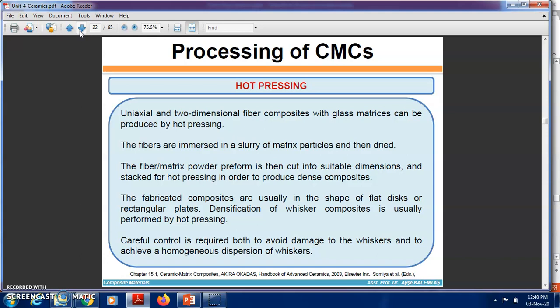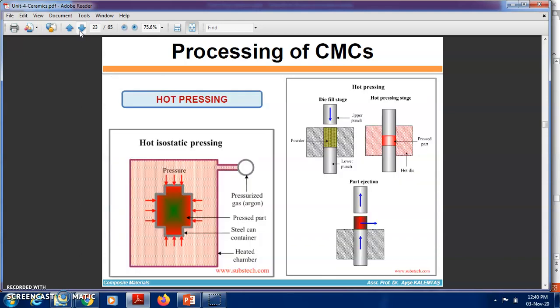Densification of fiber composites is usually performed by hot pressing. Careful control is required both to avoid damage to the fibers and to achieve homogeneous dispersion of fibers. Here you can see the hot pressing process. The right-side diagram shows the hot pressing die with powder. The combination is filled, then the lower punch and upper punch are there. Once the fiber-matrix composition is filled, it is pressed with load applied by both upper die and lower die. After the process, the upper portion is ejected and the lower punch moves upward, so the component can be taken outside.